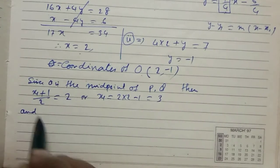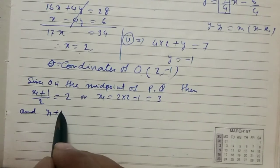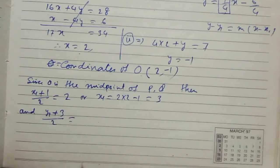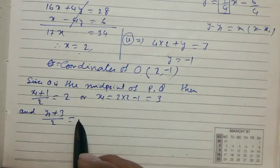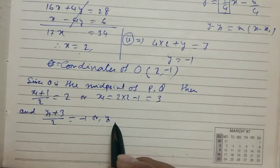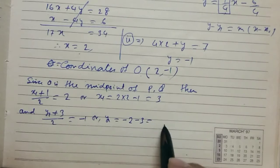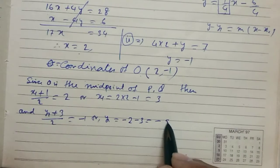So, y1 plus 3 by 2 is equal to minus 1. Or y1 equals minus 2 minus 3, which equals minus 5.